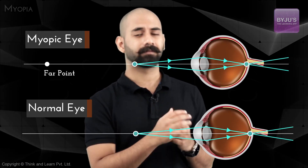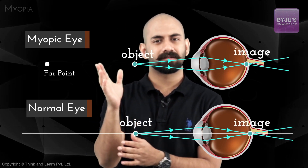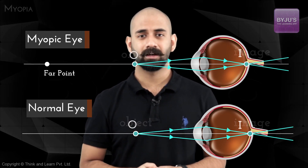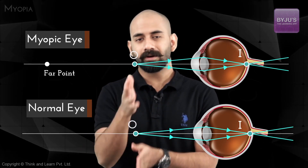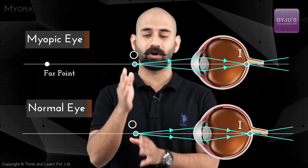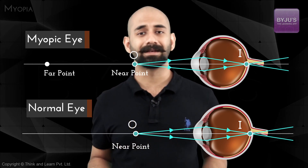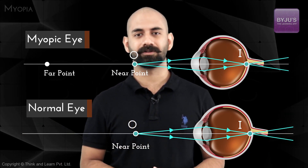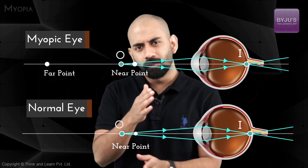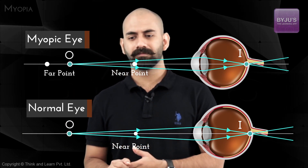Let's analyze a myopic eye versus a normal eye with an object at the same distance from both. As long as the object is close by there are no issues — if the object is at the near point, both eyes share the same near point, so there won't be any difference.